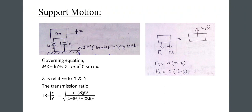Next topic is support motion. In the first figure, the base motion is y equals Y·sin(omega·t) or Y·e^(i·omega·t). There are two forces: f_s equals k·(x minus y) and f_d equals c·(x-dot minus y-dot). The governing equation in relative displacement z is: m·z-double-dot plus k·z plus c·z-dot equals m·omega²·Y·sin(omega·t). The transmissibility ratio TR equals |X/Y|, which equals the square root of [1 + (2·zeta·beta)²] divided by [(1 minus beta²)² + (2·zeta·beta)²].